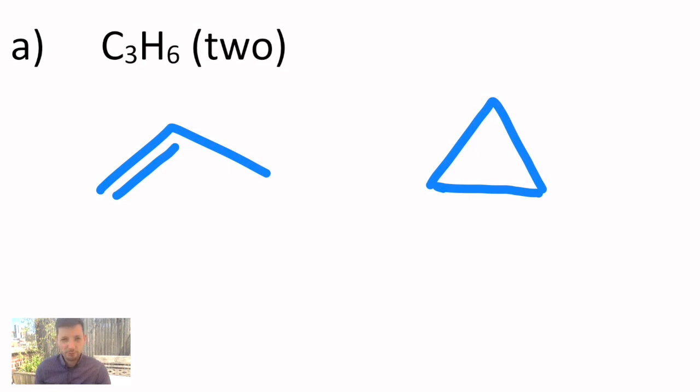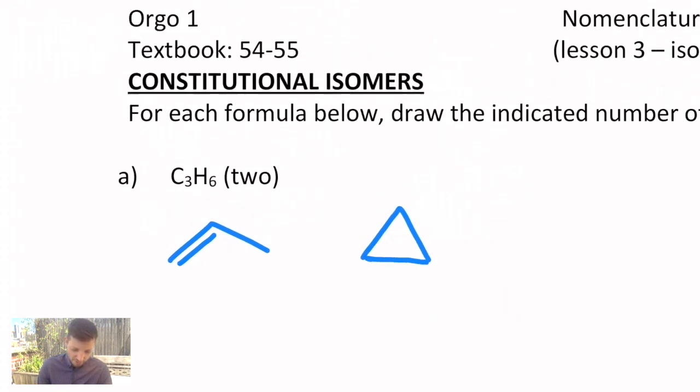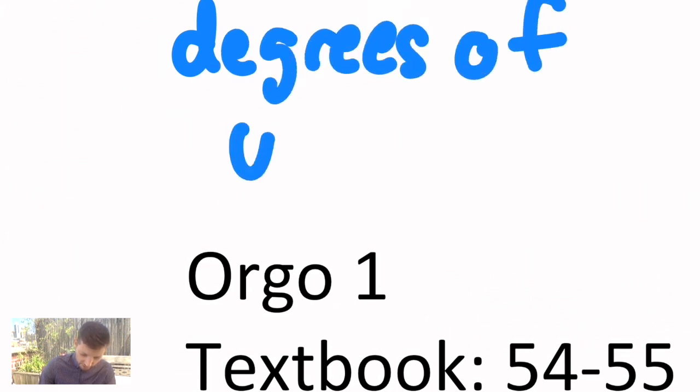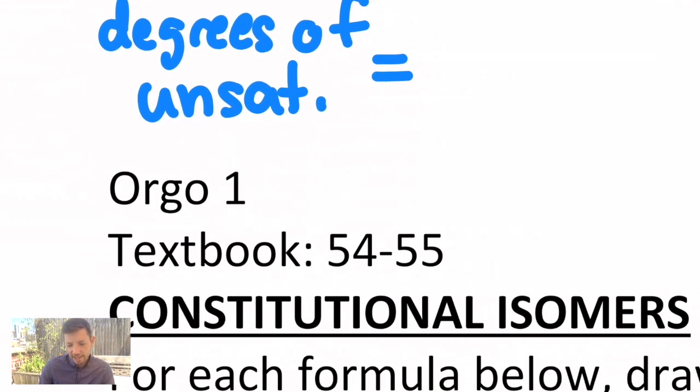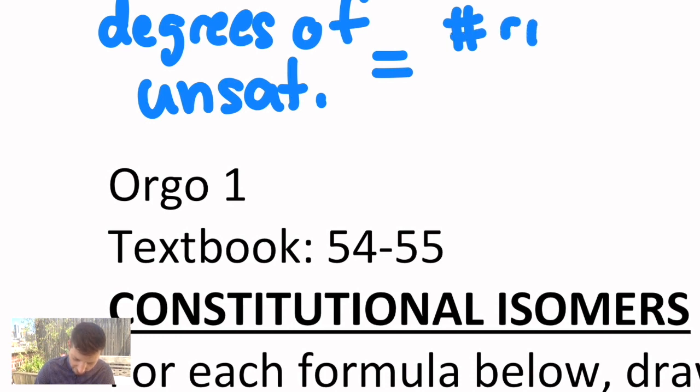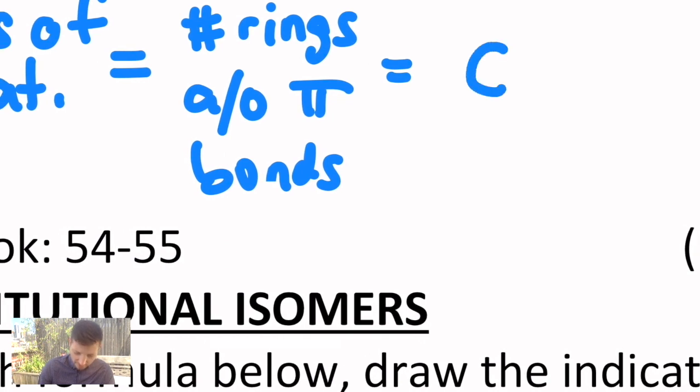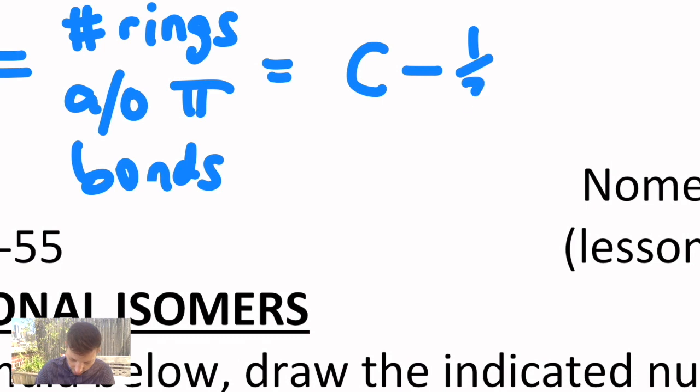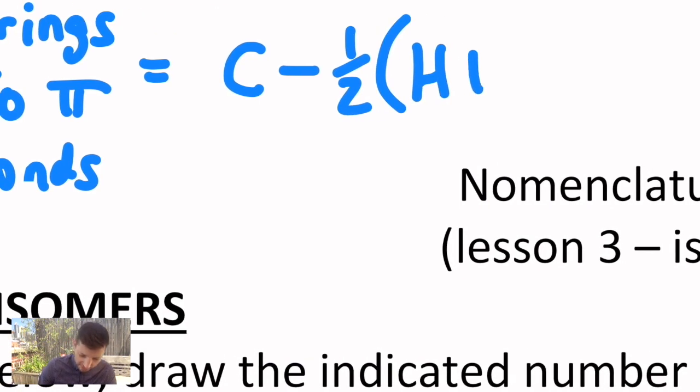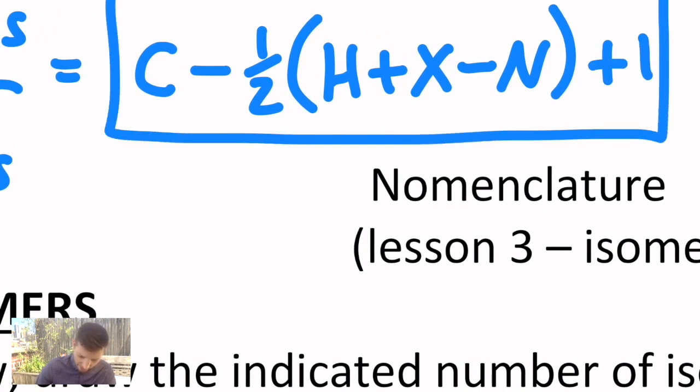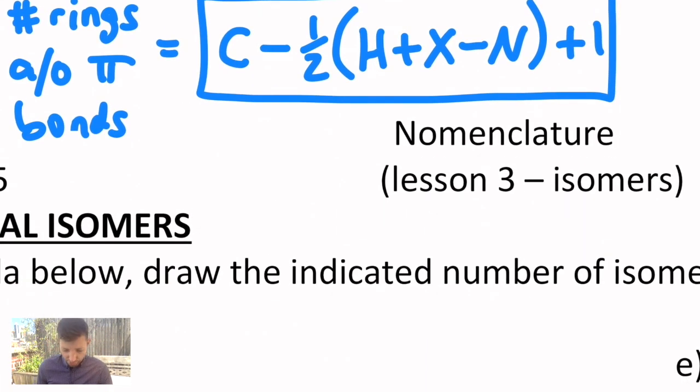Which brings us to a useful formula, which is the degrees of unsaturation. I'm actually going to squeeze that into the top of your notes for today. There's what's called the degrees of unsaturation. And we can calculate what that is for any chemical formula. It tells us the number of rings and/or pi bonds that we'll see in a structure.